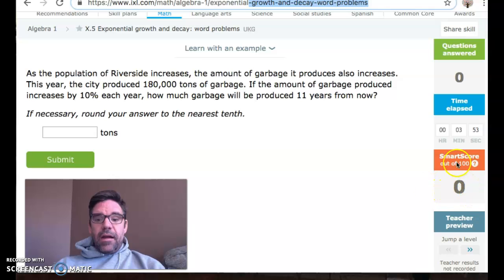But if you find that you're not getting to 80, and you have spent 30 minutes practicing, then you are also done. So either way, a smart score of 80 or 30 minutes spent on IXL, either way will get you credit for this lesson.